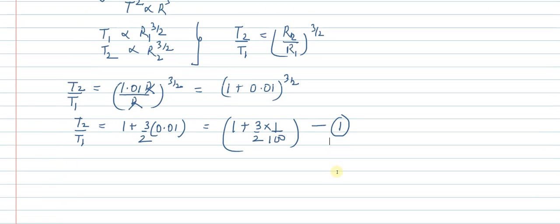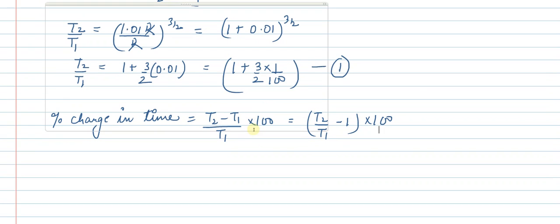Now we need to find out the percentage change in time period. The percentage change in time will be equal to (T2 minus T1) upon T1 times 100, which is (T2 upon T1 minus 1) times 100. Here, T2 upon T1 is known, so let us put the value here. What do we need?